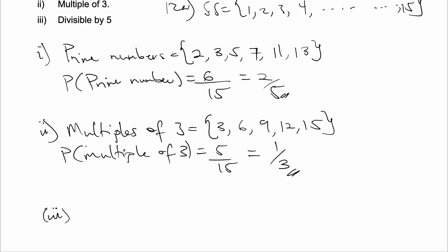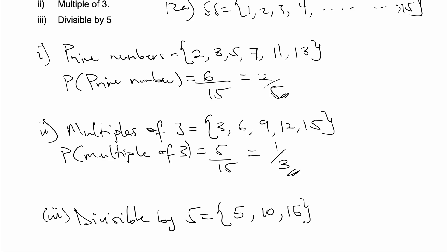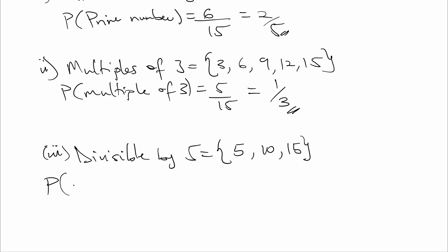For part III, we are finding the probability of selecting a number that is divisible by 5. Let's list all numbers that are divisible by 5: we have 5, 10, and 15. So the probability of selecting a number that is divisible by 5 is equal to the total numbers divisible by 5, which is 3, over the total number of values in our sample space, which is 15. And this is equal to 1 over 5.